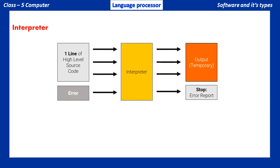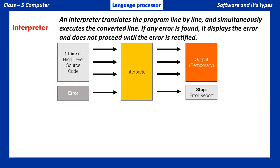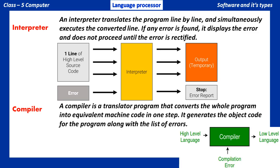Interpreter: An interpreter translates the program line by line, and simultaneously executes the converted line. If any error is found, it displays the error and does not proceed until the error is rectified. Compiler: A compiler is a translator program that converts the whole program into equivalent machine code in one step. It generates the object code for the program along with the list of errors.